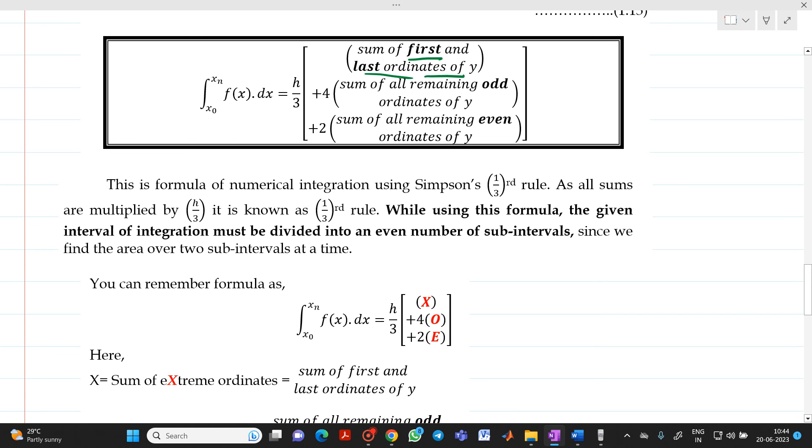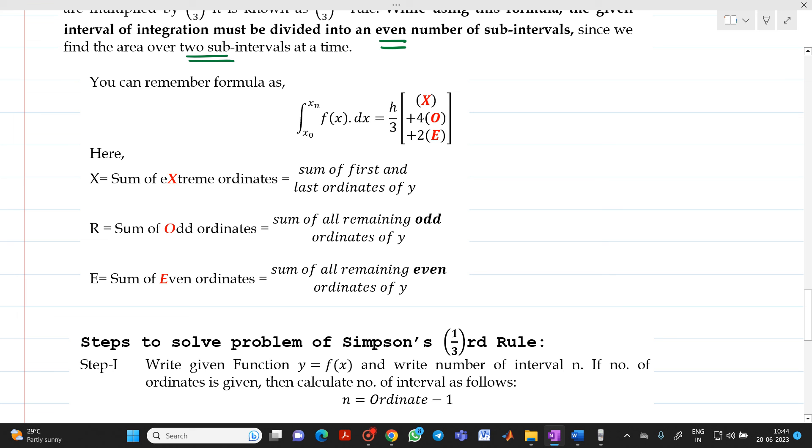Now, while using this formula, the given interval of integration must be divided into even number of subintervals. This is very important because, here if you see, the area is divided into two subintervals at a time. Now, how we can remember it? We can remember it, h/3 into bracket, x is nothing but extreme ordinates that is y0 plus yn plus 4 into odd terms that is remaining odd ordinates of y. That is 4 into y1 plus y3 and plus 2 into e means even terms that is sum of all remaining even ordinates of y. So, it will be 2 into y2 plus y4 whatever it may be.